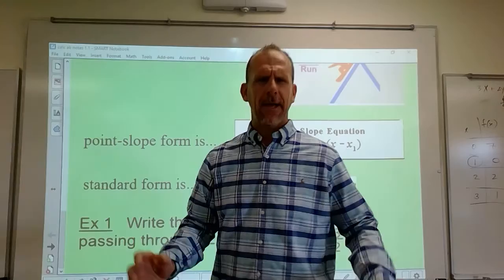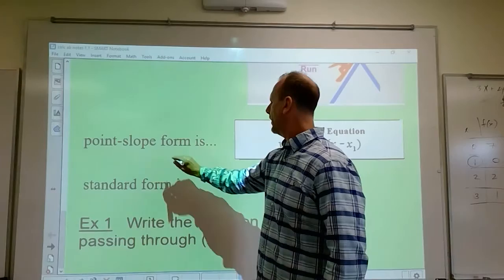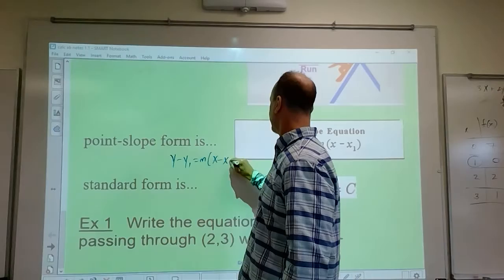Okay class, this is what we're going to do today — we're going to do point-slope form: y minus y1 equals m times x minus x1. Brett Tyson, do you have a question?